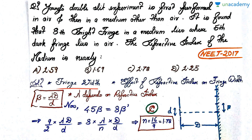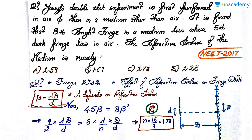You need to know fringe width, the effect of refractive index on fringe width, and how λ depends on refractive index. The fringe width formula is β = λD/d. The 5th dark fringe lies between the 4th and 5th bright fringes — at a position of 4.5β from the centre. The 8th bright fringe in the medium is at 8β', where β' is the new fringe width in the medium.